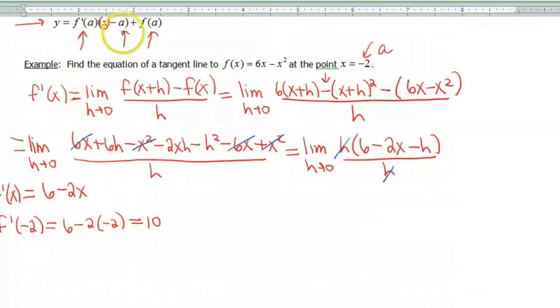Okay, I know that a is negative 2, so I really don't do much with the second piece. But I need to also figure out what is f of negative 2. So this is where it can be a little bit confusing. You need to plug in your number into your derivative, as well as your original function. You need to plug it into both. So 6 times negative 2, minus negative 2 squared, leaves me a value of negative 16.